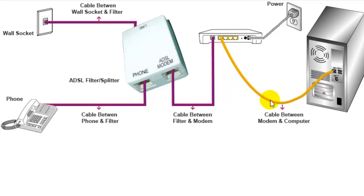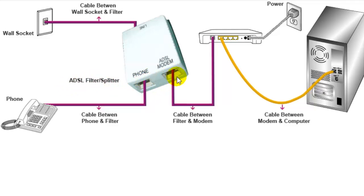I'll explain the steps you need to take to configure or install your internet modem using ADSL. First, find the phone socket in your home. One end of the ADSL filter cable goes into that wall socket. The ADSL filter has two ports at the other end: a phone port and an ADSL modem port. The phone port connects to your phone using a normal phone cable, and the ADSL modem port connects to the modem using a normal phone line.